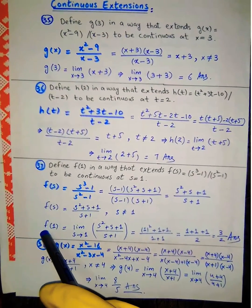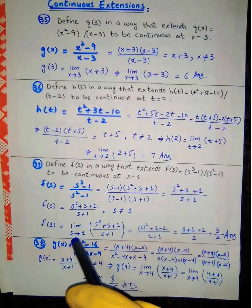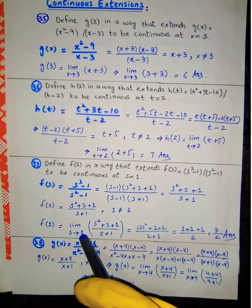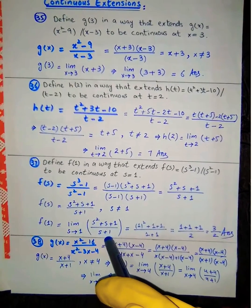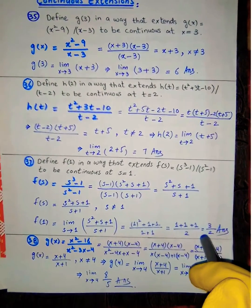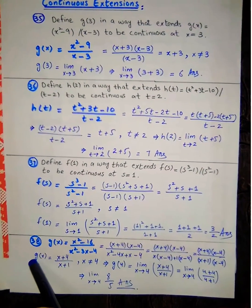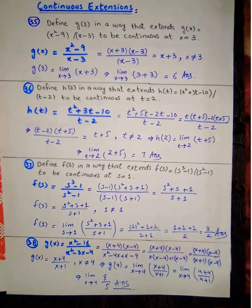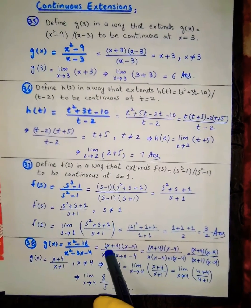Now f(1) is defined by applying the limit as s approaches 1. Substituting s = 1 and simplifying gives us the answer.